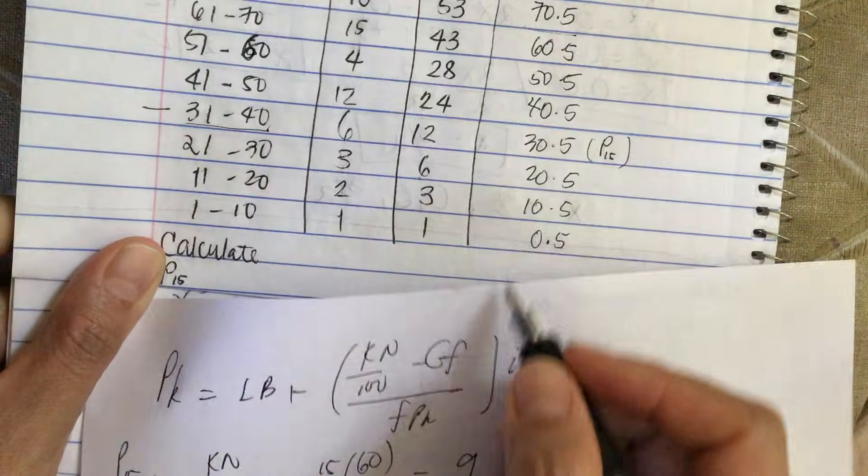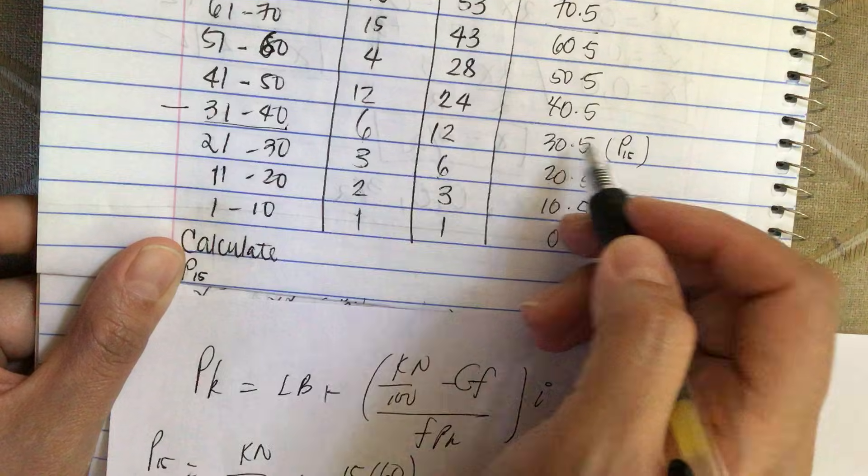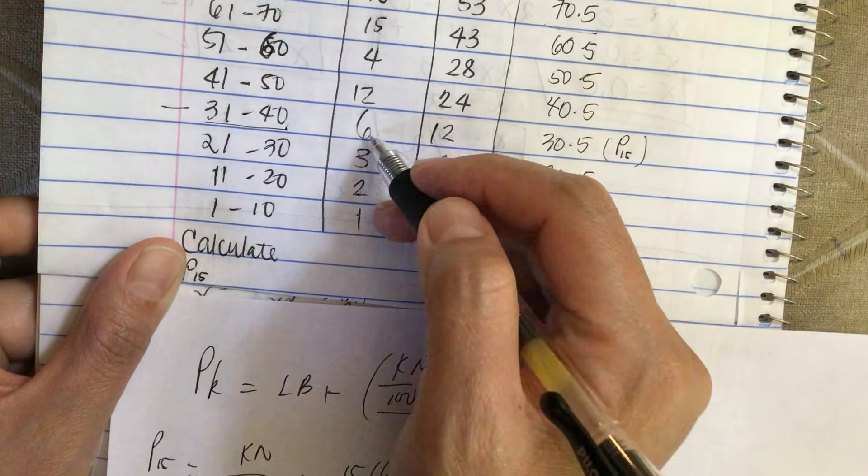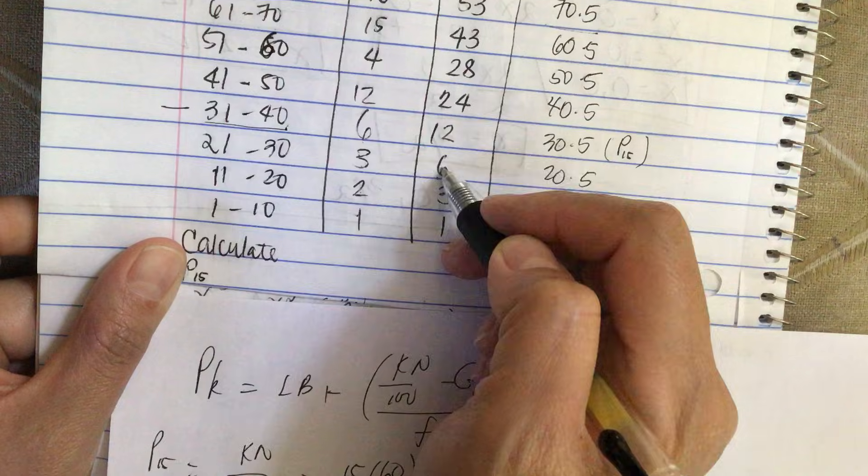CF is the cumulative frequency before, so this is the before P15, so it's 6.